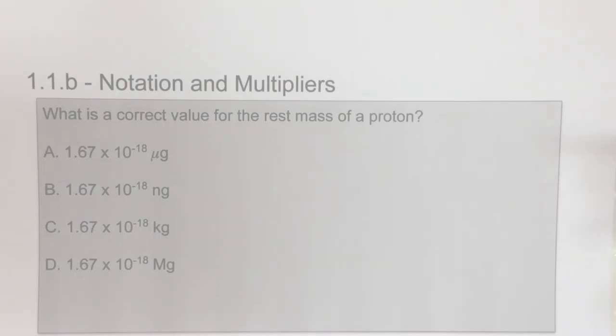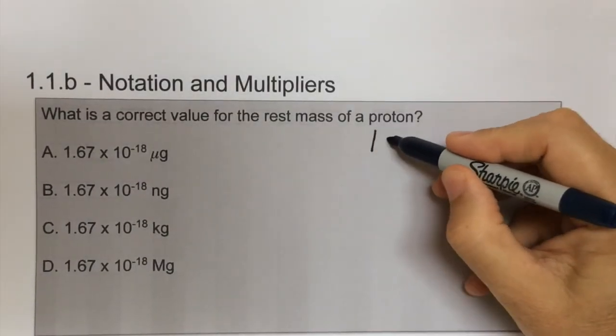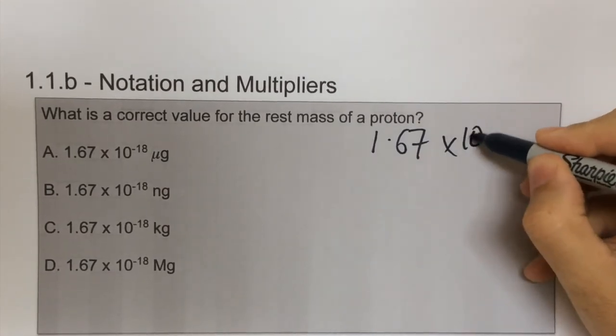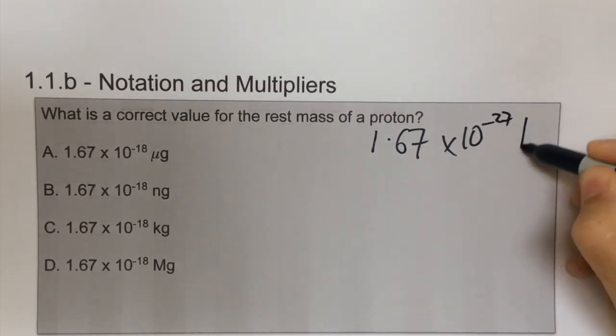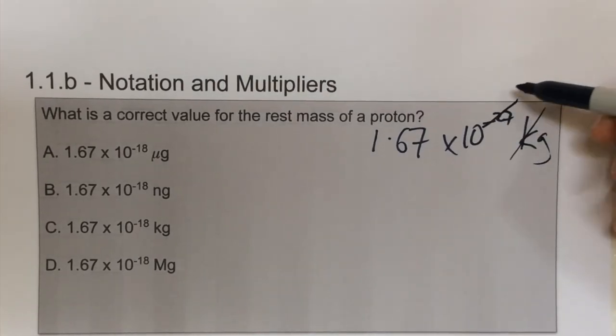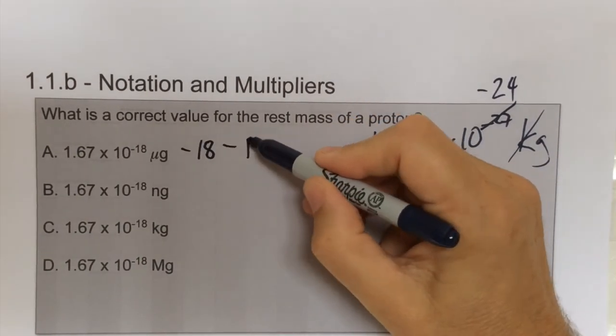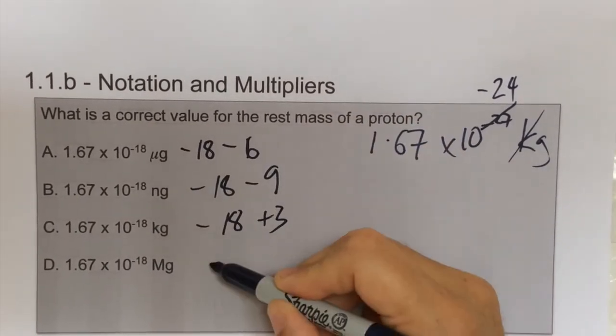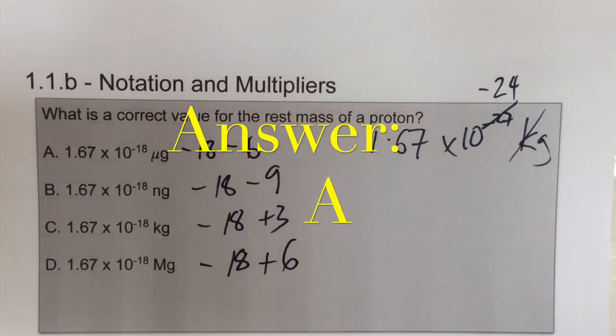To answer this question we go to the data booklet to find the value of the rest mass of the proton and we take account of the fact that it's in kilograms whereas the question is asking about grams. And then we write down each of the indices for the options, add them together and we find which one is minus 24.